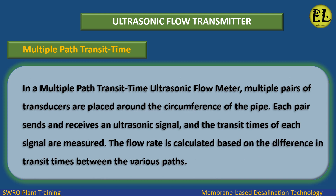In a multiple path transit time ultrasonic flow meter, multiple pairs of transducers are placed around the circumference of the pipe. Each pair sends and receives an ultrasonic signal, and the transit times of each signal are measured. The flow rate is calculated based on the difference in transit times between the various paths.